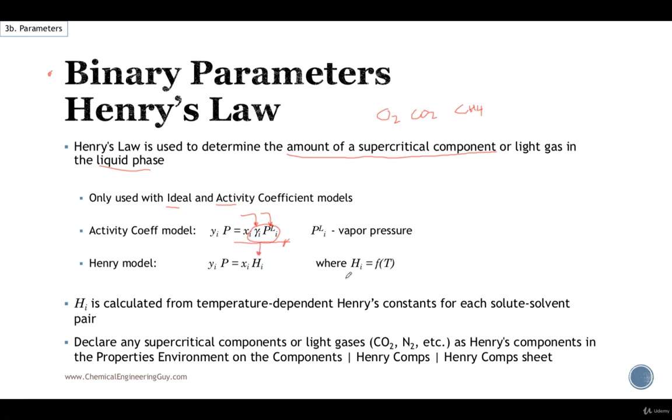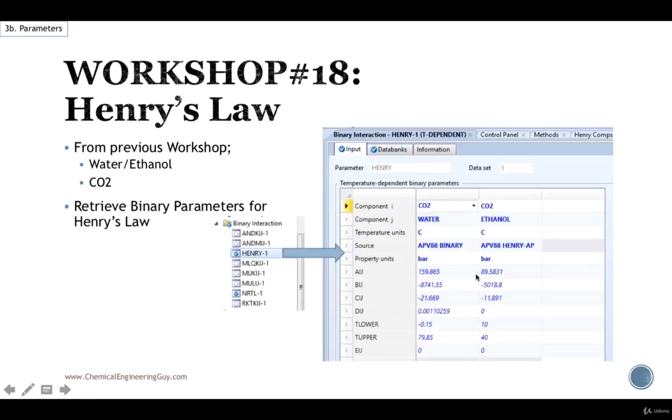Now it's important to denote that Henry's law is based on temperature, and that it requires parameters from Aspen Plus. So we got those parameters. We just need to declare the solute and solvent. As stated here, declare the supercritical components, and essentially we need to do that in the following workshop.